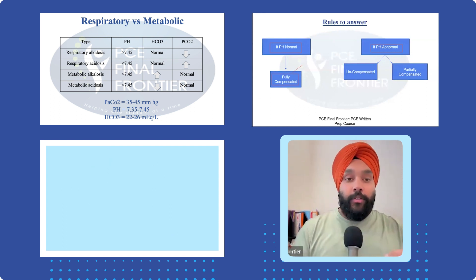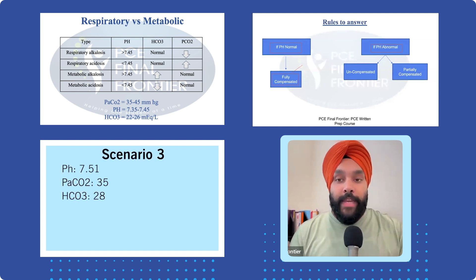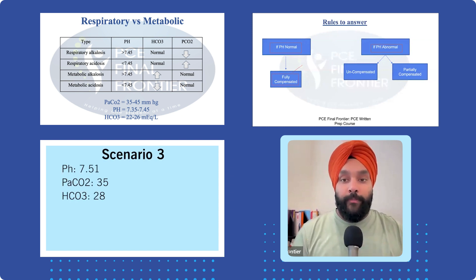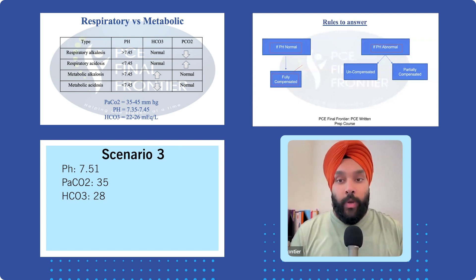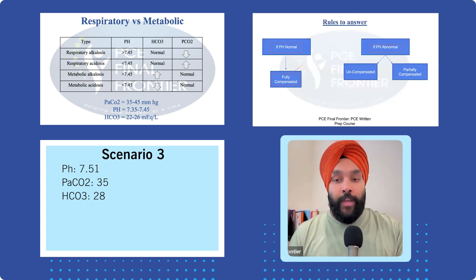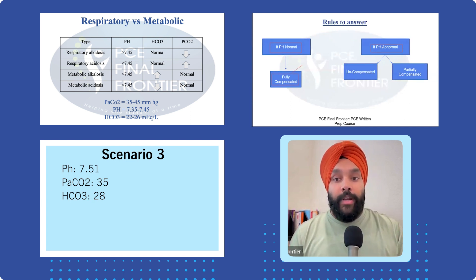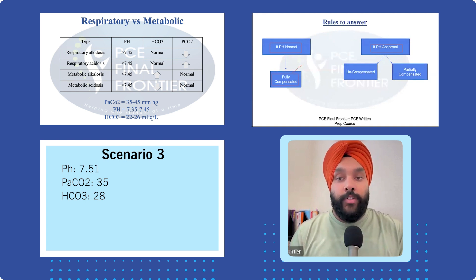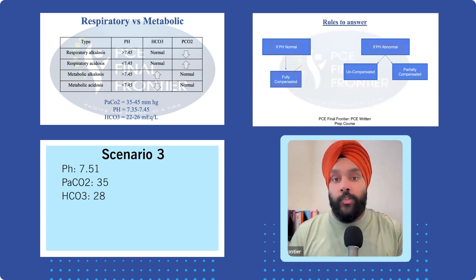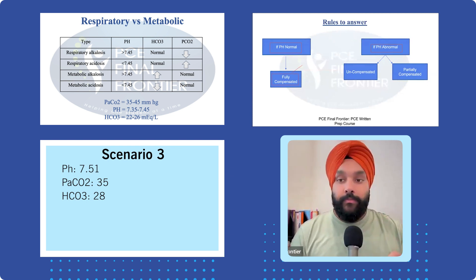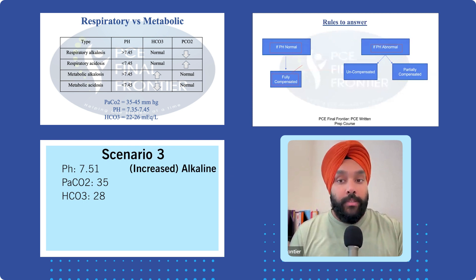Scenario three: pH is 7.51, carbon dioxide is 35, bicarbonates are 28. Is pH normal or abnormal? This is where we make a decision — the pH is abnormal. To which side? Towards alkaline. Is carbon dioxide normal? Yes, it's 35 — within the normal range.